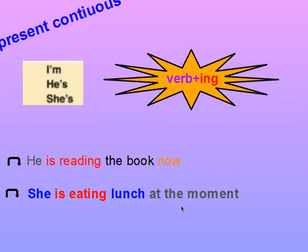She is eating lunch at the moment. I am doing my homework now. Summary: the present continuous uses I am, he is, she is plus verb plus ing. He is reading the book now; she is eating lunch at the moment.